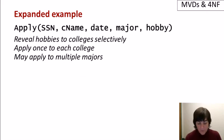Let's look at one more example before we go on to talk about properties of multi-value dependencies. I've extended the apply relation now to not only include colleges and hobbies, but also the date of application to a college and the major or majors that are being applied for. Let's continue to assume that hobbies are revealed to colleges selectively, so we don't need to have the same hobbies for each college that a student applies to.